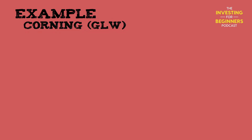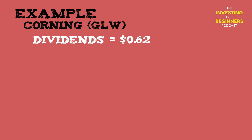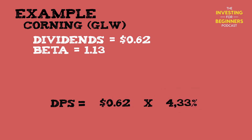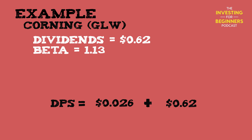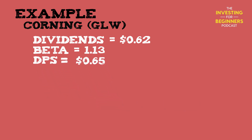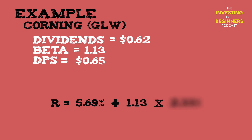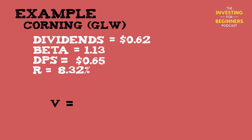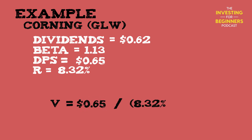Let's try one more — Corning. Inputs for Corning are: dividends equal $0.62, and beta is 1.13. First, the future dividend of Corning will be the current dividend times the GDP growth rate: 0.62 times 4.33% equals 0.026. Adding that to the current dividend of $0.62 gives us a future dividend of $0.65. Next, the cost of equity equals 5.69% plus 1.13 times 2.33%, which gives a cost of equity of 8.32%. Plugging the numbers into our formula: 0.65 divided by (8.32% minus 4.33%) gives a value of Corning equal to $16.29.